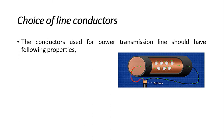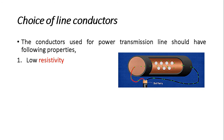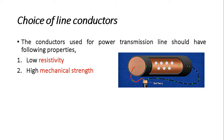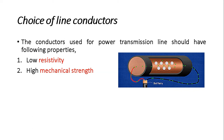The conductor used for transmission as well as distribution purposes should have certain properties. The first property is low resistivity, or high conductivity, in order to carry more power or more current. The second property is high mechanical strength, or tensile strength, to withstand heavy mechanical load — because in certain cases conductors must be ready for ice, stone, and wind conditions. Mechanical strength should be as high as possible.